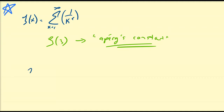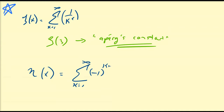Another special function that we have introduced is the Dirichlet eta function, eta of x, which is defined to be equal to the alternating series from k equals 1 to infinity of negative 1 to the power of k plus 1, all over k to the power of x. One can view the Dirichlet eta function as an alternating Riemann zeta function. Clearly, one special constant often seen throughout mathematics is eta 1, which is easy to prove equal to the natural log of 2.